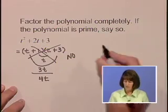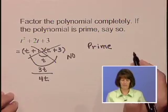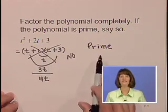This polynomial, then, we would say is prime because it does not factor. The polynomial t² + 2t + 3 is indeed prime.